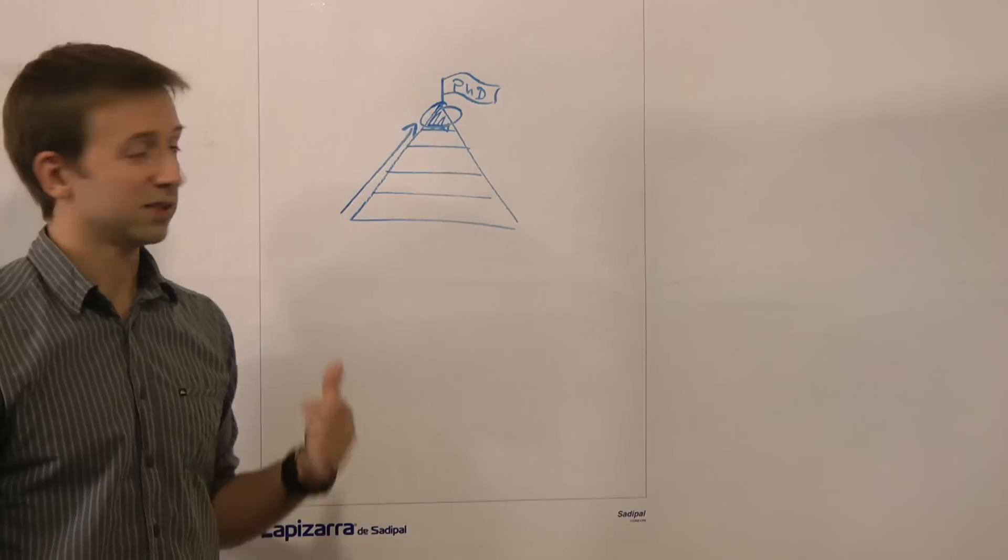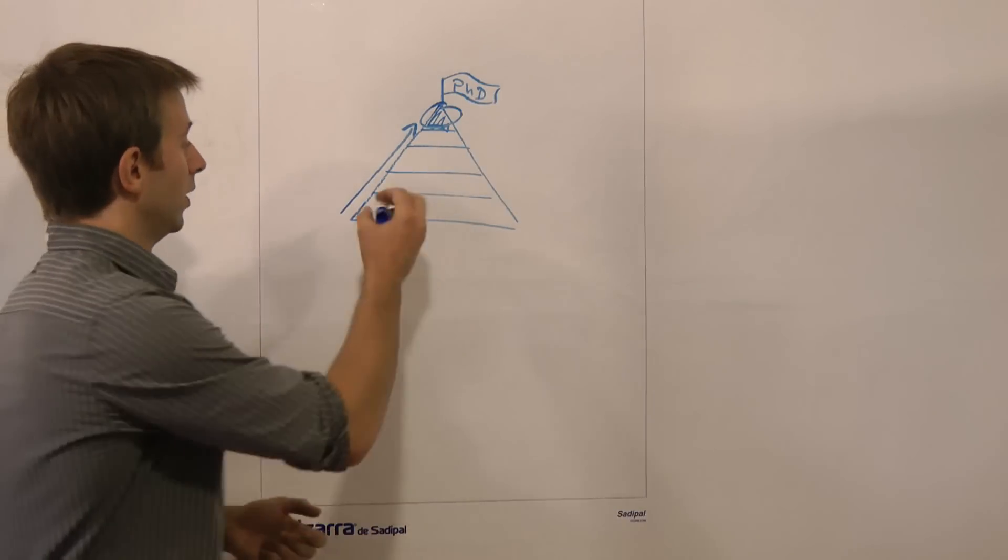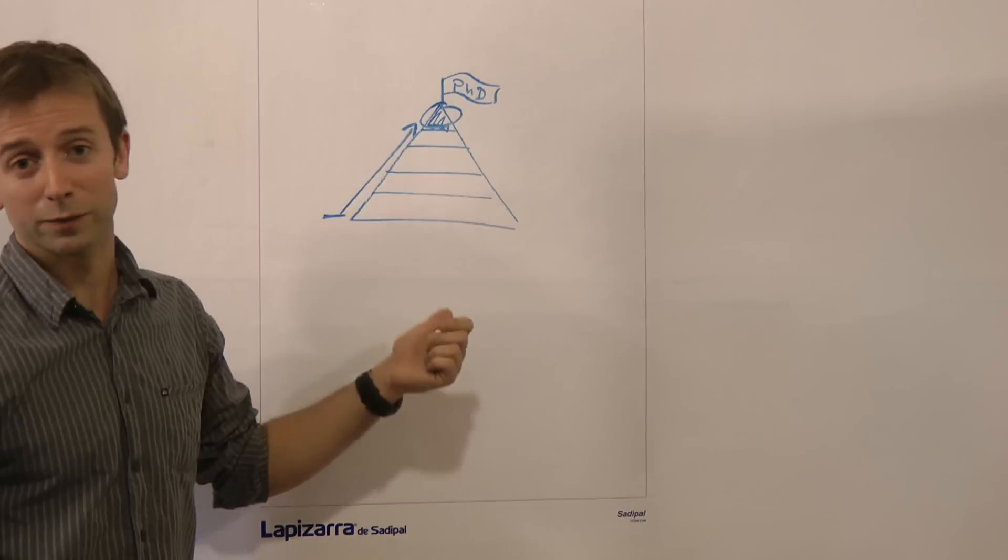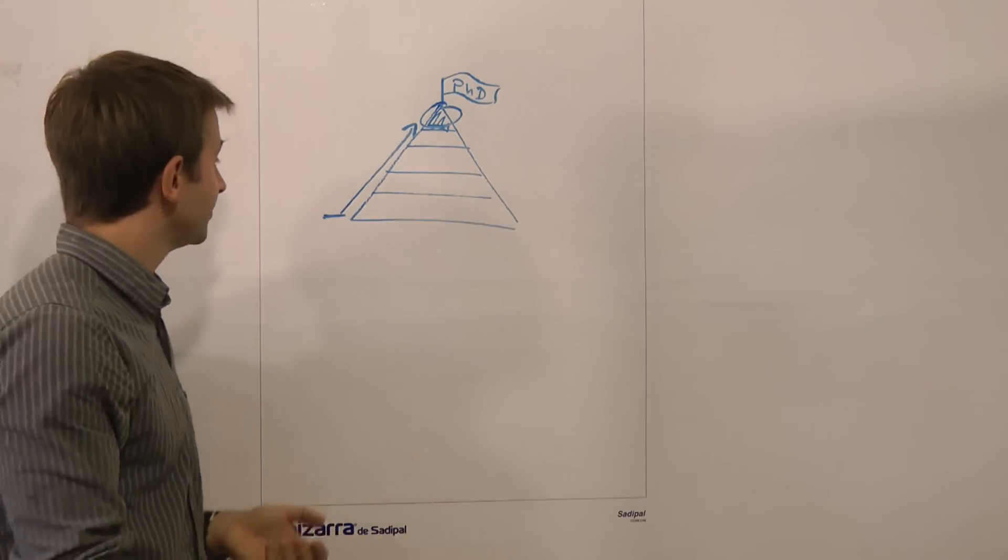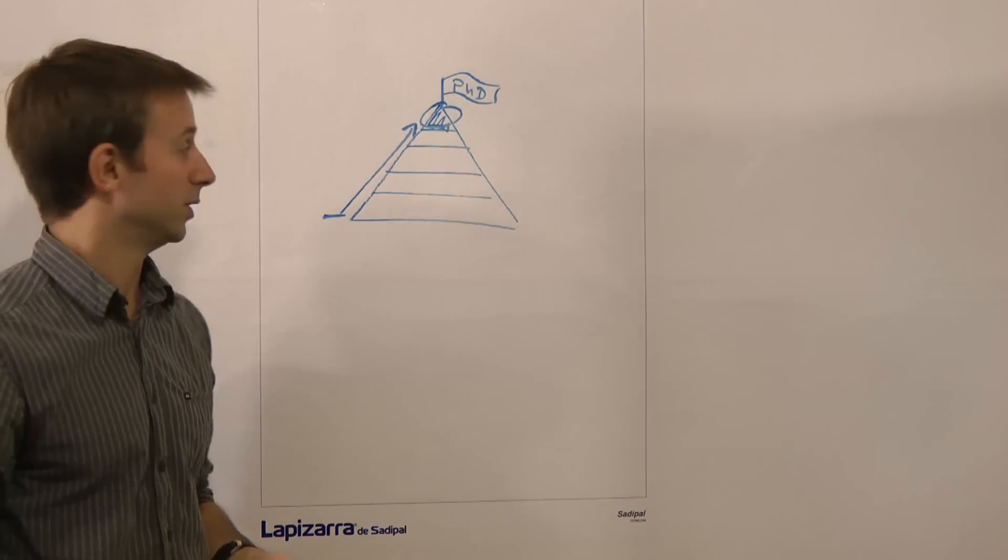So why is it that the smartest, most intelligent people all the way through from the age of five when you start school up until whenever it is you start a PhD, why is it that a PhD is so difficult?